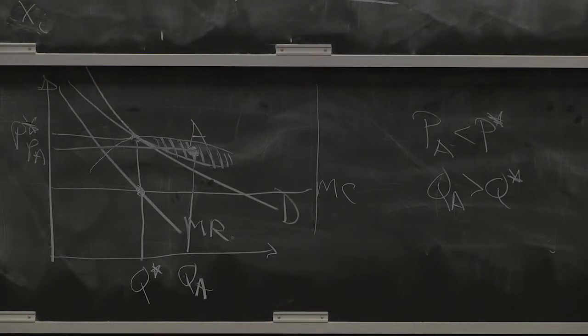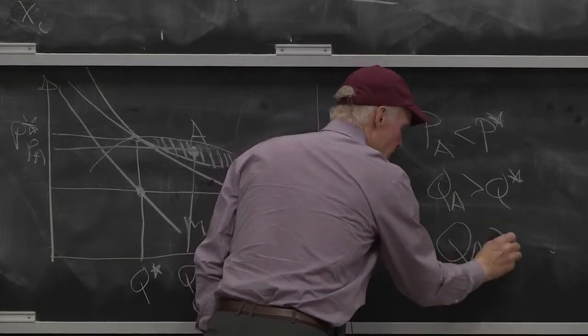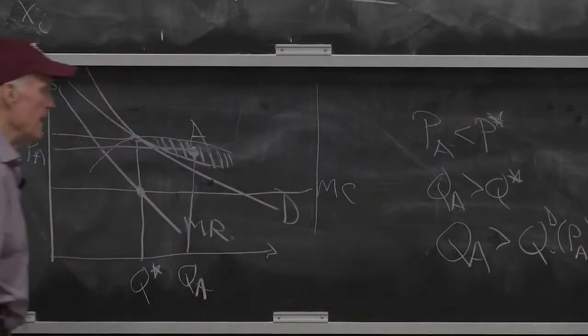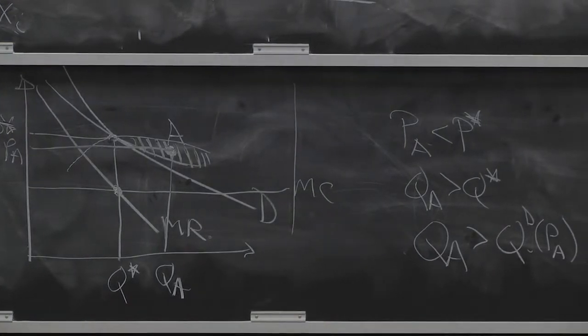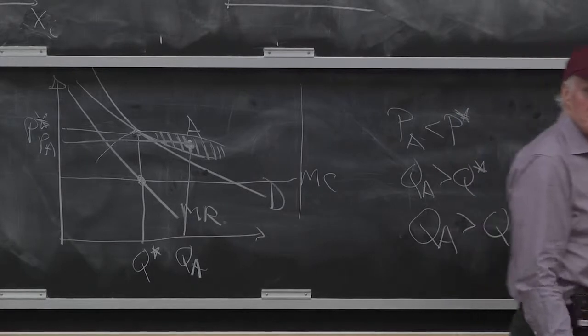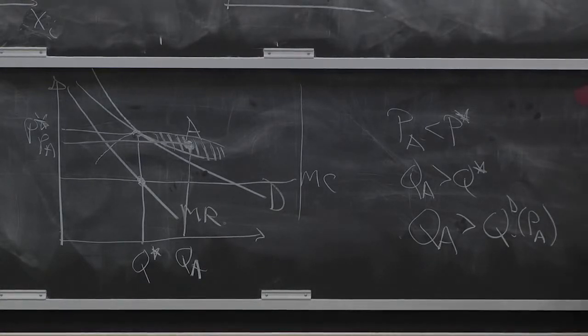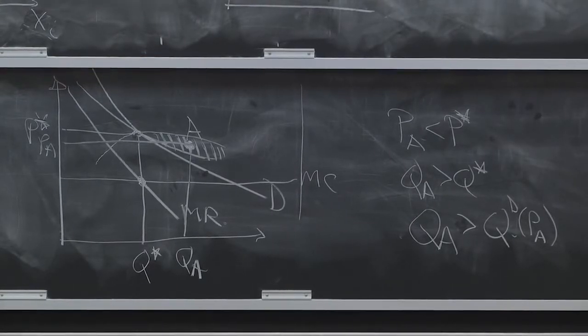What else? It's actually a very important feature, which is Q-A is bigger than quantity demanded at P-A. That is, the consumer is off his demand curve. He's buying more than he would want to buy at that price. Everybody see that? So if we can figure out a way to get that consumer off his demand curve, both him and the monopolist could be better off.